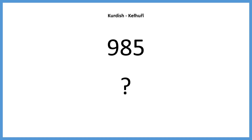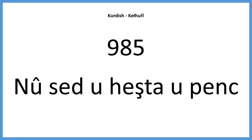We will end the lesson with three examples that are more tricky. Take some time to apply the rules that you have learned when forming these numbers. Let's start with the number nine hundred and eighty-five. Nine hundred and eighty-five would be: nu sed u heshtau penj. Nu sed — nine hundred. U — and. Heshtau penj — eighty-five. Nu sed u heshtau penj.